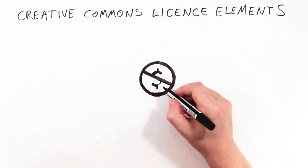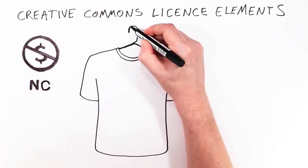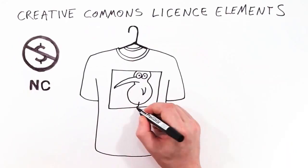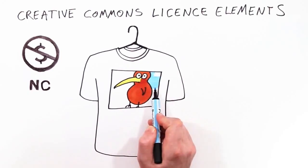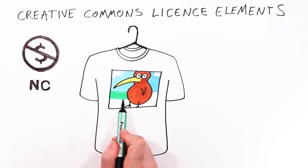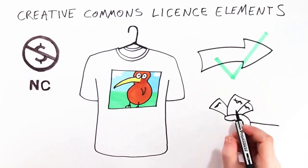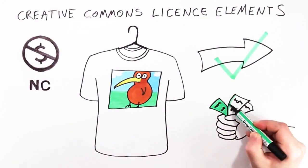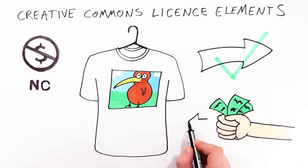This is non-commercial. It means no one else but Kiri is permitted to make money from CC Kiwi. Tim wants to print the photo onto t-shirts and distribute them to friends. He can do this but he must not sell them.